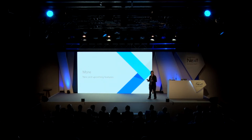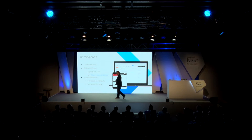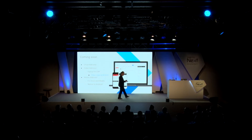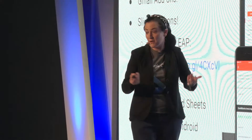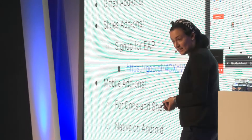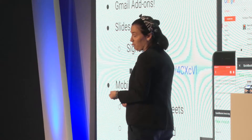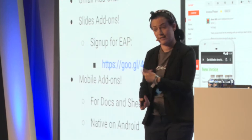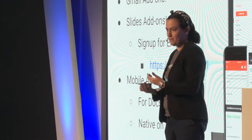There are a couple of things on the roadmap for Apps Script and add-ons in general. One is Gmail add-ons, which allows creating templates in Gmail to automatically send reports. Slides will also get an add-ons feature - that's actually an early access program you can register for now. And also mobile add-ons: if you create Apps Script for Docs or Sheets, it will also work on your mobile phone via the browser, and natively on Android as well.